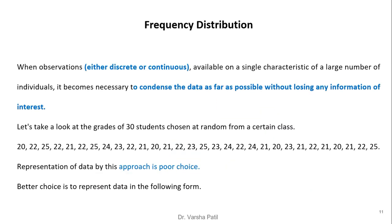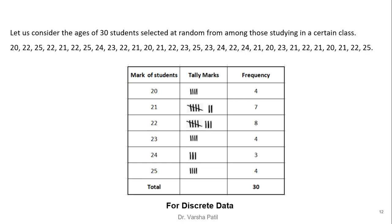Frequency distribution: when observations, either discrete or continuous, are available on a single characteristic of a large number of individuals, it becomes necessary to condense the data without losing any information of interest. For example, looking at the grades of 30 students chosen at random from a class, representing 30 data points as a continuous run is a very poor choice. A better choice is to represent the data in a table with three columns: marks of students, tally marks, and frequency. This approach is used for discrete data.